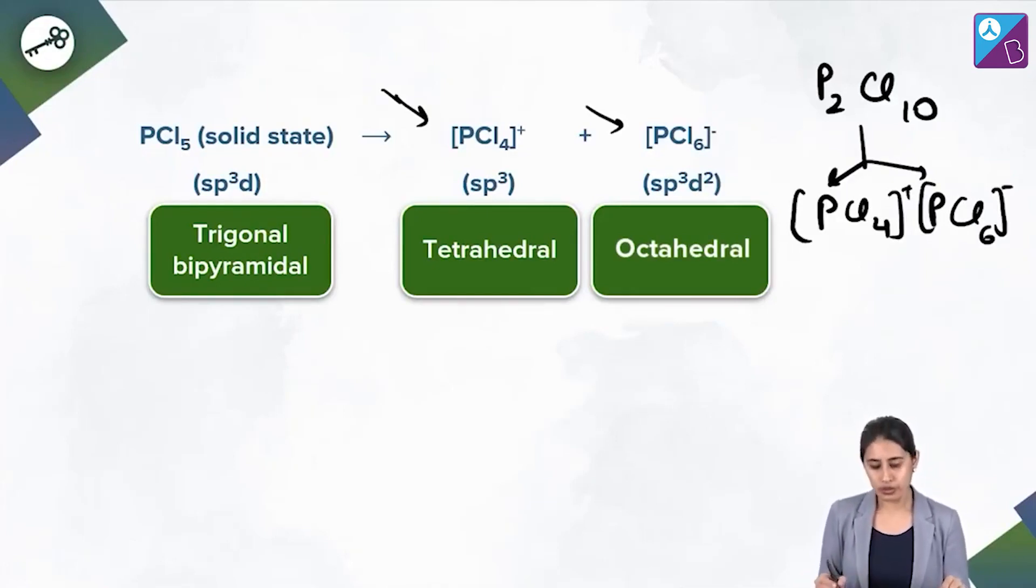Now you know the steric number formula very well. So you simply apply this. 5 + 4 - 1/2, 5, 6, 7, 8, 9 - 1/2 is of course 4. So it is tetrahedral. So PCl4+ exists like tetrahedral and PCl6-...